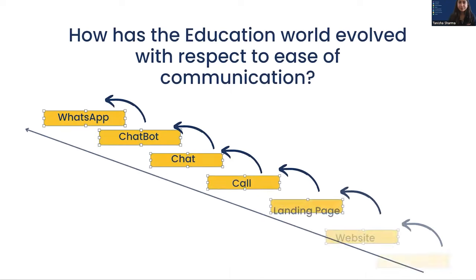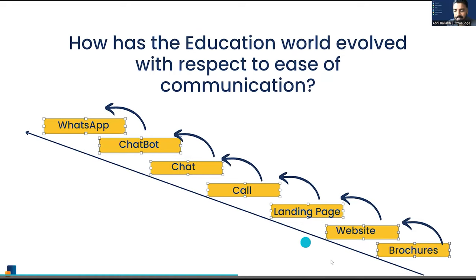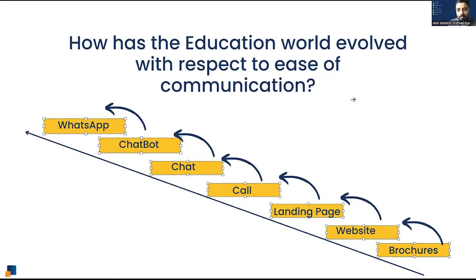How has the education world evolved with respect to ease of communication? We were in a world of brochures — which still exist for outbound events — then moved to websites, landing pages, call chatbots, and now WhatsApp. All of these still exist; it's not that any are dead. But the relevance of each has shifted — brochures are now actually being distributed on WhatsApp today.